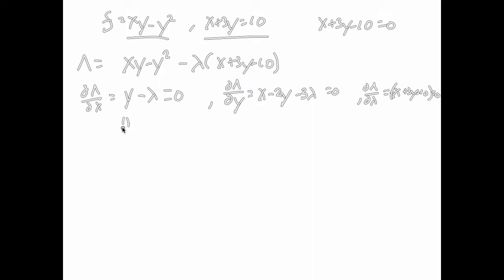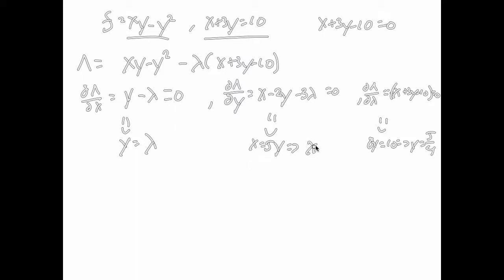From the first equation we get y equals lambda. From the second equation, plugging in y equals lambda, we get x equals 5y. The third equation then implies 8y equals 10, so y equals 5/4. Once we know y equals 5/4, x equals 25/4. And since lambda equals y, lambda equals 5/4 as well. We have a single critical point. Importantly, the constraint is satisfied: 25/4 plus 3 times 5/4 equals 40/4, which equals 10.